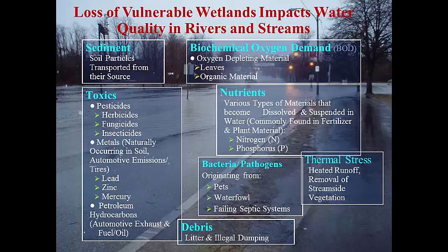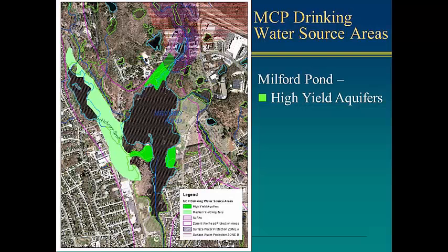As seen in this chart, roadway, landscaping, and agricultural runoff can contain nutrients, bacteria, debris, sediment, and a host of other contaminants that degrade surface water quality and impair aquatic ecosystems. The cost to deliver quality public drinking water to our homes relies to a large extent on the quality of water in our wetland and groundwater systems.